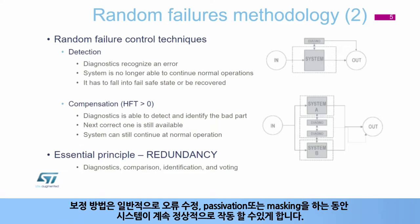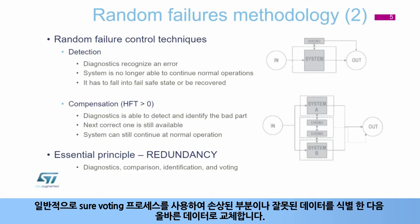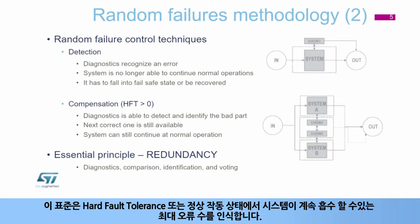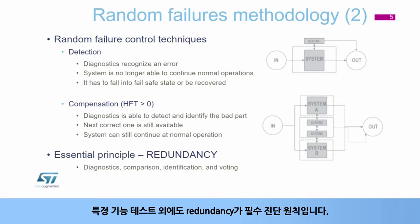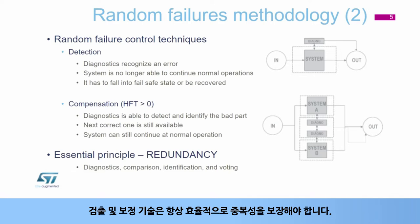Compensation methods usually allow the system to continue operating normally while using error correction, passivation, or masking functions. Generally, a voting process is used to identify the damaged part or incorrect data, which is then replaced by the correct one. Standards recognize hard fault tolerance — the maximum number of errors which the system can absorb while it can still continue at normal operation. In addition to specific functional testing, redundancy is the essential diagnostic principle. Both detection and compensation techniques always require a sure level of redundancy to be efficient.